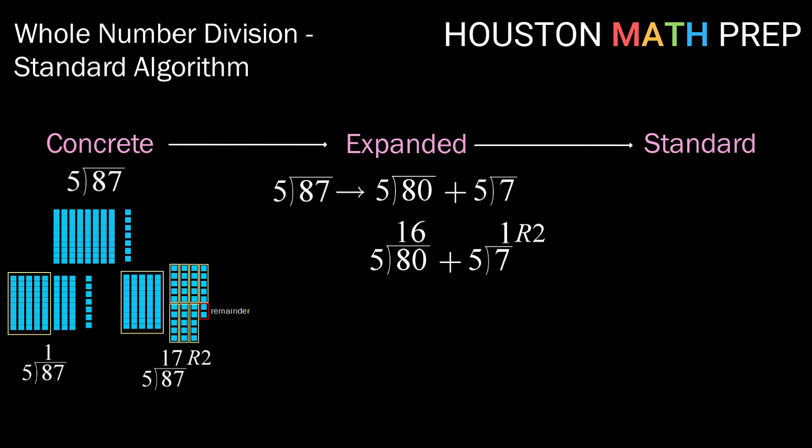Well, there are 16 groups of 5 in 80 and there are 1 group of 5 in 7 with a remainder of 2. Adding that up, we get that there are 16 plus 1 or 17 groups of 5 with a remainder of 2.